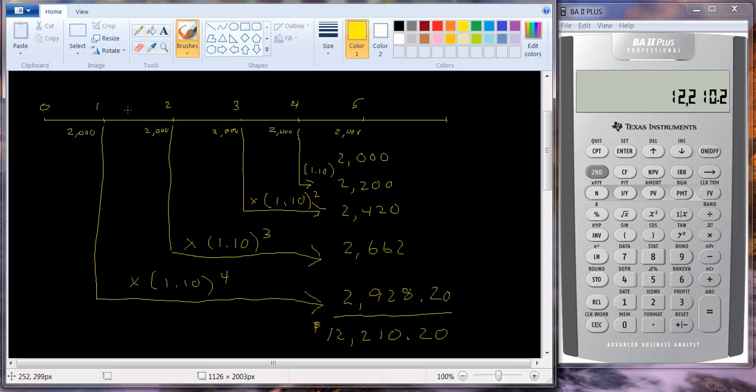But if you figure out how much this amount of money deposited in year one is worth in year five and you figure out how much money this is worth in year five, you can add them together. That's what we've done. We've brought everything out to year five and added them up.